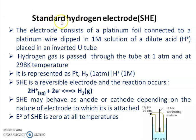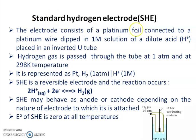Why is it called 'standard'? Because we maintain standard conditions: the electrolyte concentration at one molar, the pressure at one atmosphere, and the temperature at 25 degrees centigrade. Under these conditions, the potential developed across this electrode is called the Standard Hydrogen Electrode potential.